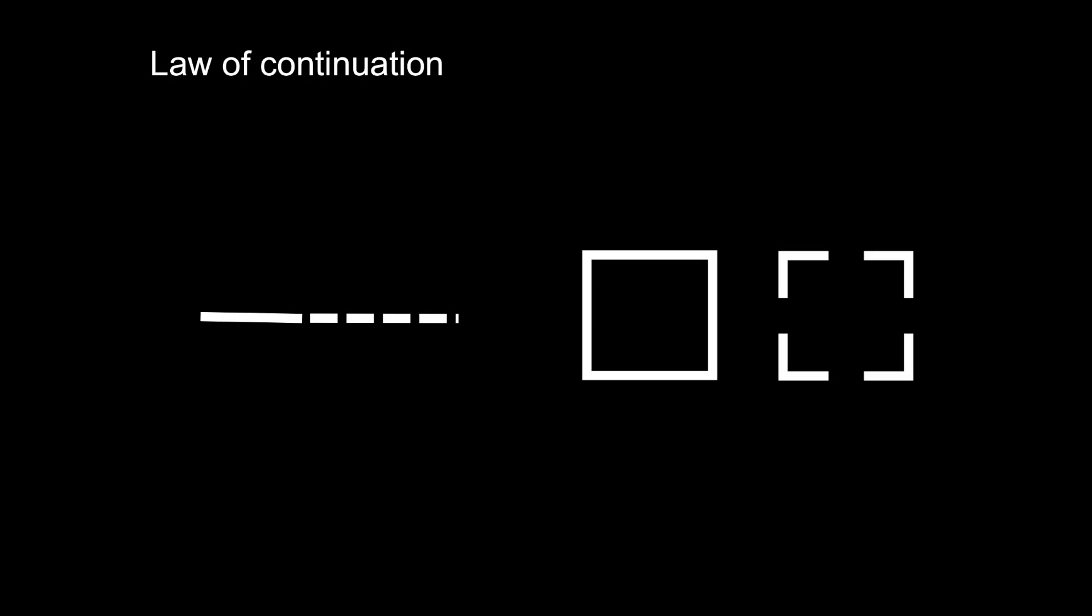The Gestalt law of continuation states that the eye sees a geometrical form, even if it is not complete. So a dotted line is perceived as being continuous, and a square can be suggested by just the corners on their own.